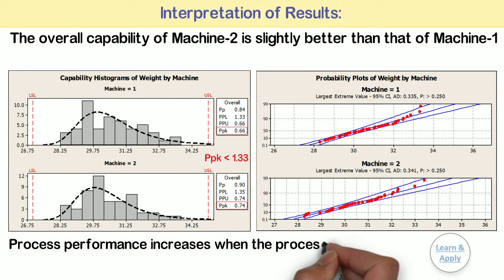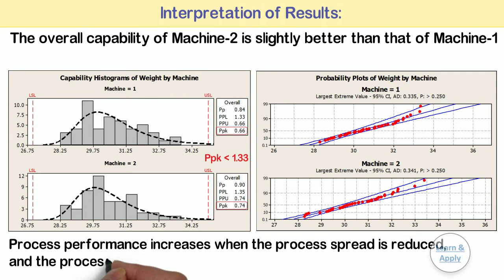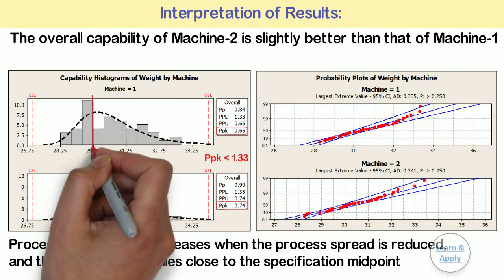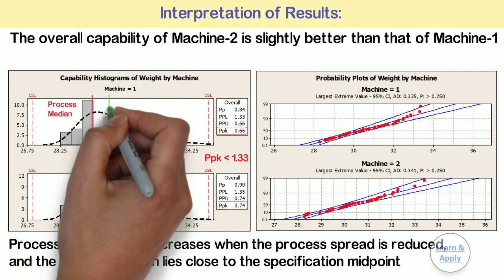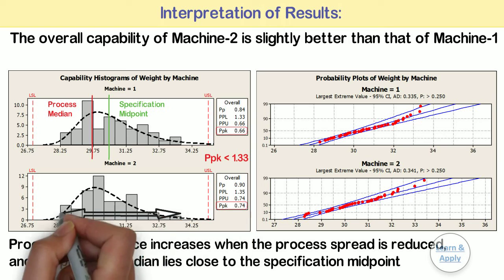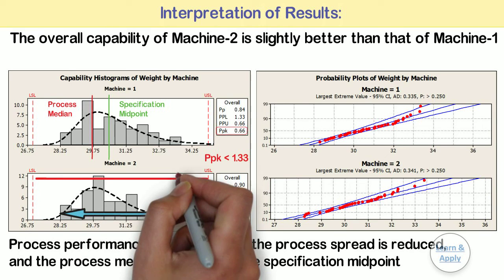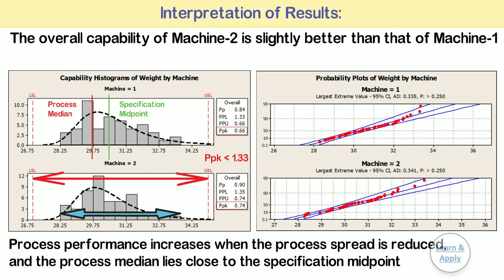Process performance increases when the process spread is reduced and the process median lies close to the specification midpoint. For both machines, the process median is off the specification midpoint and the process spread is too large relative to specification limits. The manufacturer needs to improve the process.